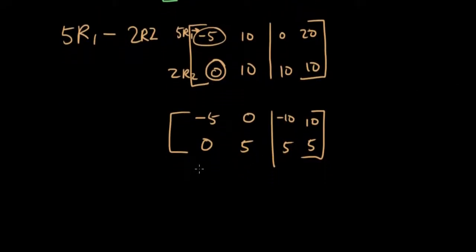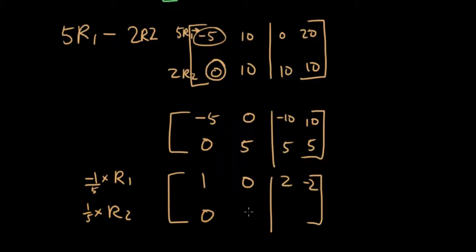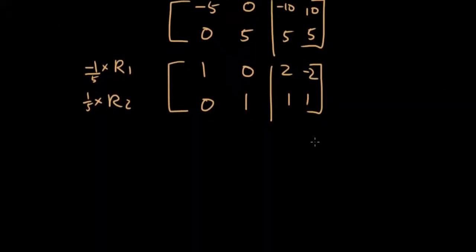Now I'm going to multiply row one by negative one and then divide it by five. So row one will become one, zero, two, negative two. And then row two — I'm going to divide it by five — so it will be zero, one, one, one. Now the left-hand side has turned into an identity matrix. That means matrix x is equal to two, negative two, one, one.